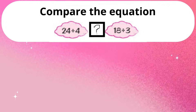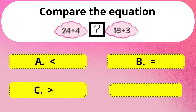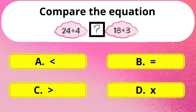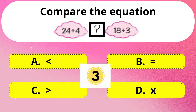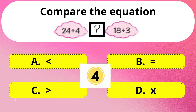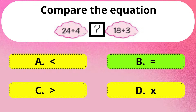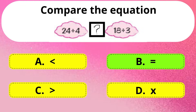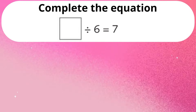Next question. Compare the equations: 24 divided by 4 and 18 divided by 3. Correct answer is Option B: equal to. Both equal 6, so the answer is equal.